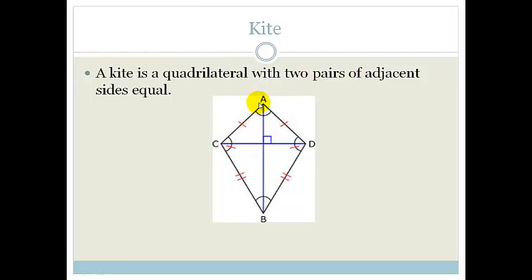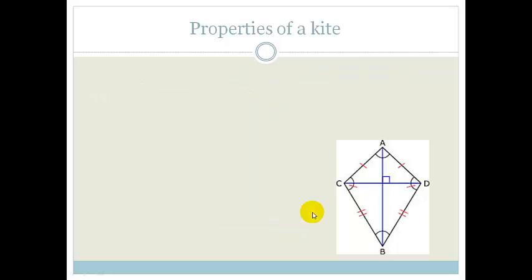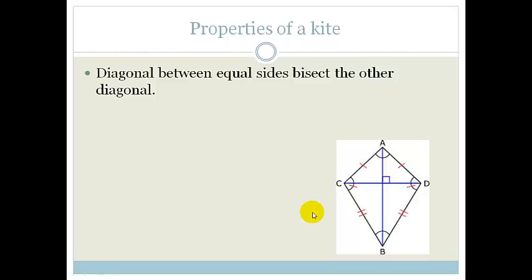In other words, AC is equal to AD and DB is equal to BC. The first property states that the diagonals between the equal sides bisect each other — this diagonal is equal to this diagonal.